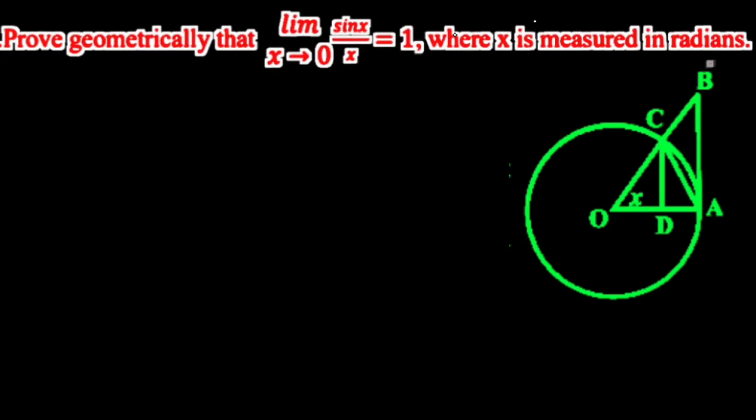Hi students, welcome to the ASPEN classes. In this first year, we are going to solve a fixed question using the sandwich theorem. The question is: prove geometrically that the limit of sin x divided by x is equal to 1, when x tends to 0. This is a fixed question for 5 marks.